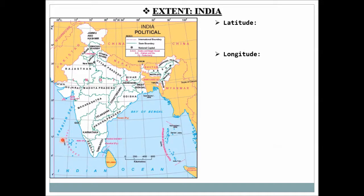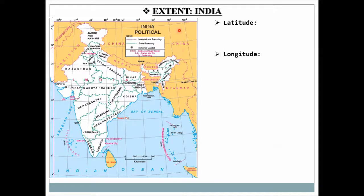We have to study the extent of India and Brazil. Extent can be latitudinal extent or longitudinal extent. Latitudes are the horizontal lines, so India starts from one horizontal line and ends at another horizontal line — that is the latitudinal extent. Similarly, longitudinal extent is from which vertical line India starts to which vertical line India ends.